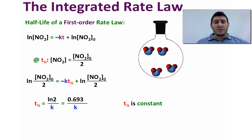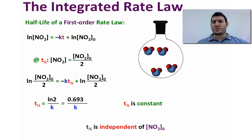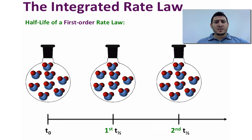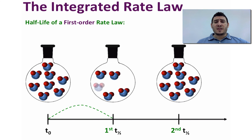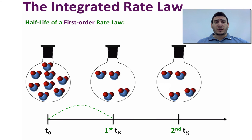The half-life is independent of the initial concentration of NO₂. Looking at this example, it takes the same amount of time to consume four particles from t₀ to the first half-life, and two particles from the first half-life to the second half-life.